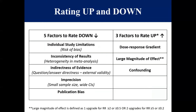Finally, there are three factors to rate up in the GRADE approach: a dose-response gradient, which comes from dose-response analyses; a large magnitude of effect, in which we see how big the overall effect is; and confounding. The latter two apply principally to cohort studies and are not commonly found in SRMAs in nutrition.